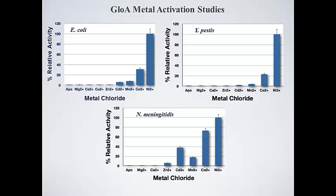Additional studies have shown that many other glyoxalase-1 enzymes share the metal activation profiles seen for the E. coli enzyme. For example, the Yersinia pestis and the Neisseria meningitidis enzymes, as shown here, provide additional evidence to support the hypothesis that there are, in fact, two subclasses of glyoxalase-1 enzyme in nature: one that is zinc-activated, and the other that is not activated by zinc ion but is maximally activated by nickel ion.